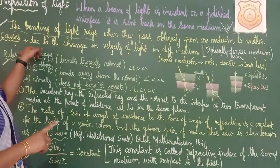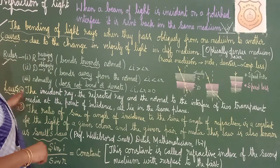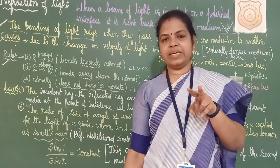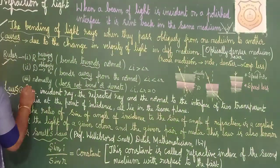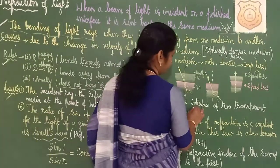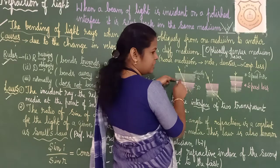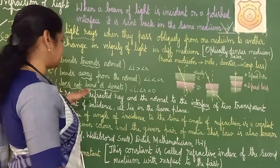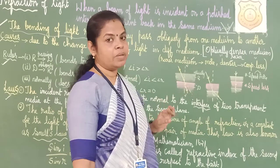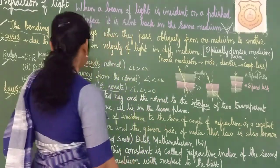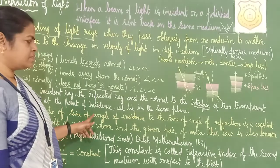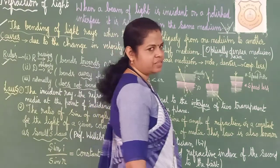So: first point is definition; second is cause; third is rules. Now we are going to study the laws of refraction — just like reflection had two laws, here also there are two laws. The first law states: the incident ray, the refracted ray, and the normal to the interface of two transparent media at the point of incidence are all lying on the same plane.